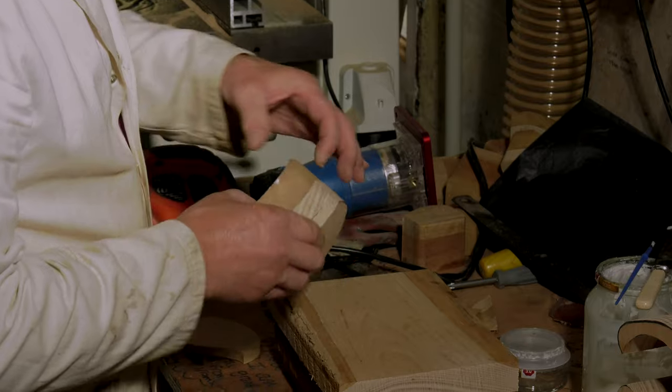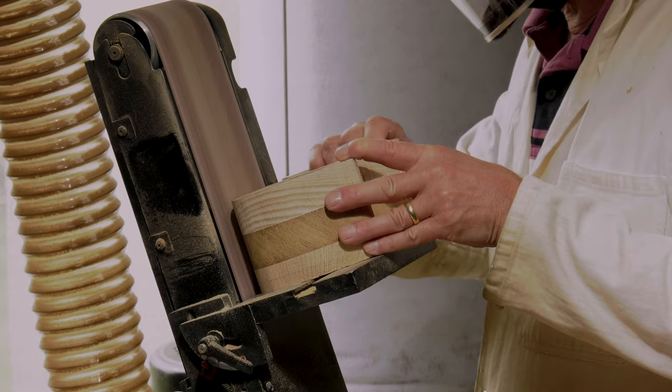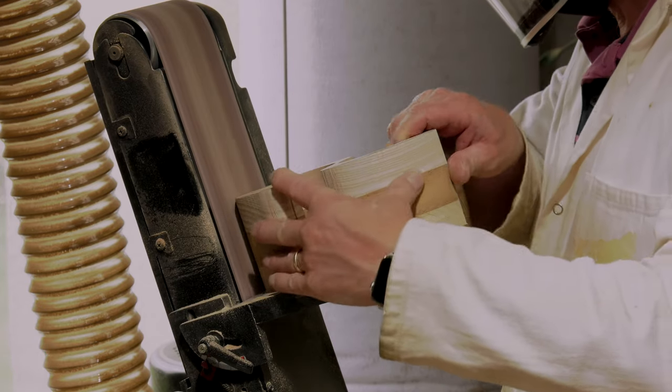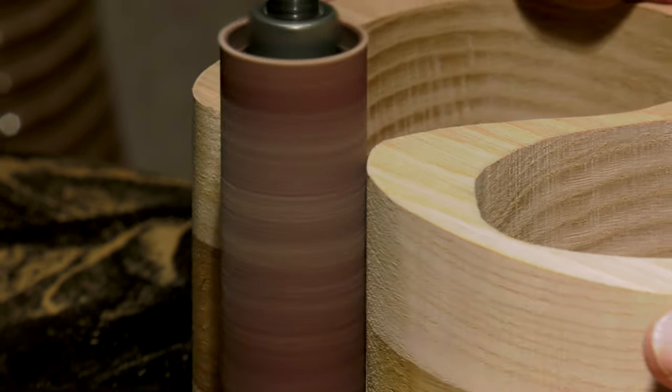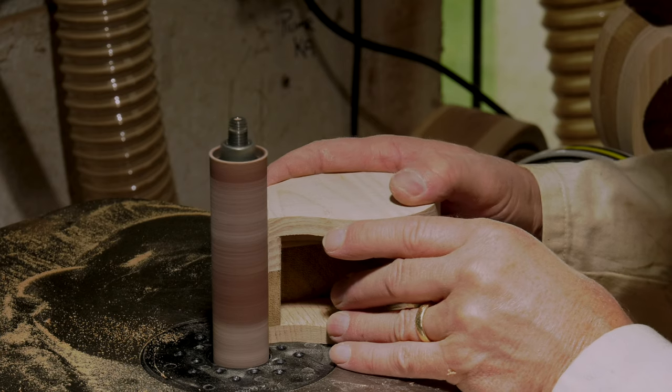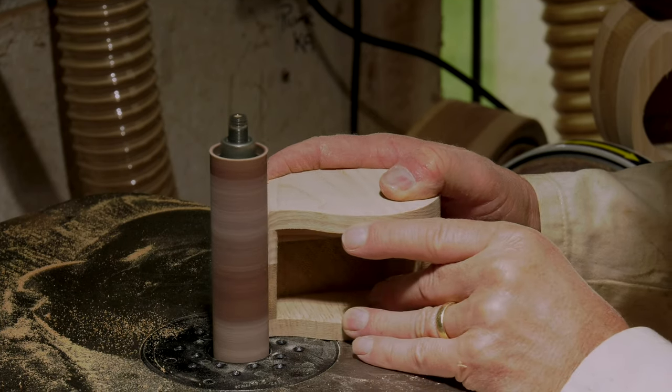This is where the fun really starts. The shaping of the drawers and the main body of the box. The outside form of each is roughed on the bobbin and belt sanders, then the edge is rounded with a radius router bit.